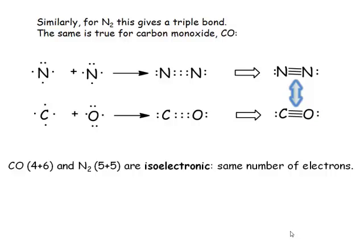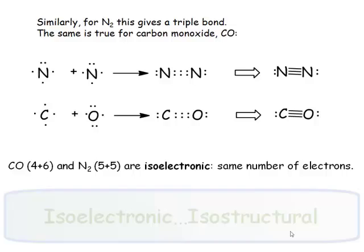Dinitrogen is isoelectronic to carbon monoxide, meaning it has exactly the same number of valence electrons surrounding its bonding atoms. And as soon as they're isoelectronic, then you can expect them to be isostructural, to have the same structure as well.